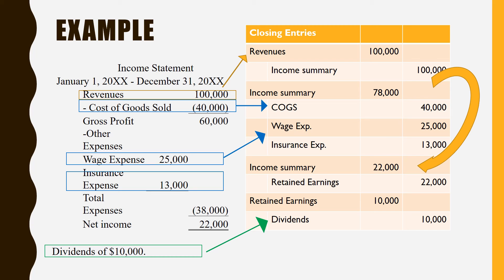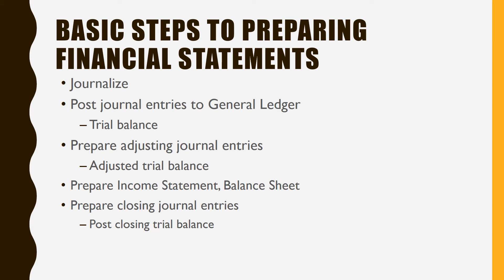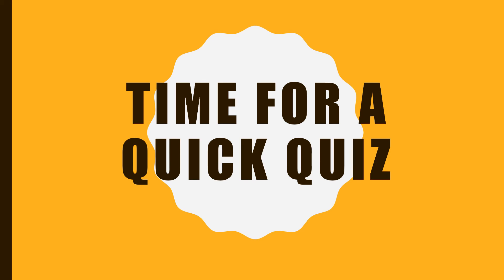Ending retained earnings is now what's showing on the balance sheet and we are good to go. This adds a couple more steps to those basic financial statement steps we talked about a couple lessons ago — journalizing, doing the general ledger, doing adjusting journal entries, and the financials. Now we have one more thing: closing journal entries. After that, it's a good idea to do a post-closing trial balance just to make sure your general ledger still balances. At this point all you'll have are balance sheet accounts, since all income statement accounts will be at zero. That way you know you're starting the new year without any problems.